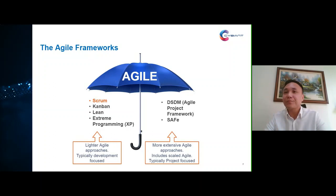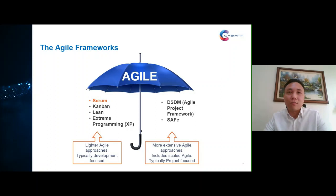So by now, looking back at the previous poll question — are agile and scrum the same thing — the answer is no. By definition, scrum is actually one of the frameworks within agile.